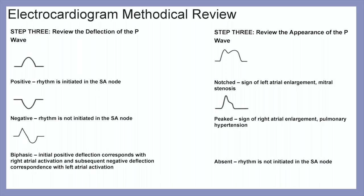Step three: look at the deflection and appearance of our P waves. A positive deflection indicates the rhythm is initiated in the SA node. A negative deflection indicates it is not initiated in the SA node. Biphasic means an initial positive deflection corresponds with right atrial activation and a subsequent negative deflection corresponds with left atrial activation. A notched P wave is a sign of left atrial enlargement or mitral stenosis. A peaked P wave indicates right atrial enlargement or pulmonary hypertension. Absent P waves mean the rhythm was not initiated in the SA node.